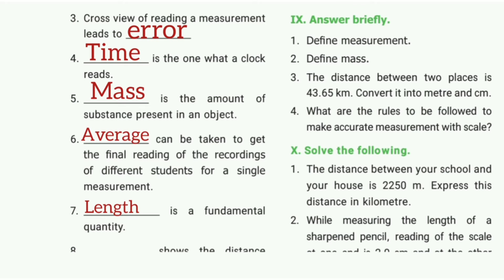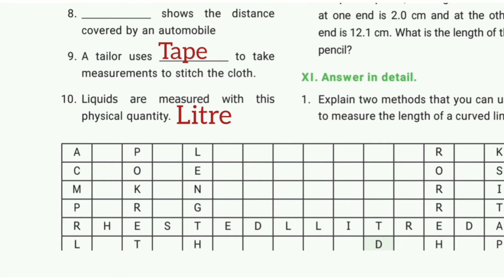Sixth one: Dash can be taken to get the final reading of the records of different students for a single measurement. The answer is average. Seventh one: Dash is a fundamental quantity. The answer is length. Ninth one: A tailor uses dash to take measurements to stitch cloth. The answer is tape.